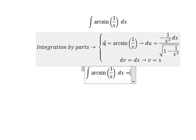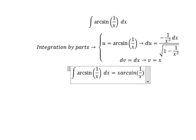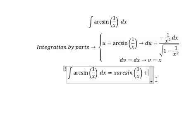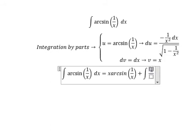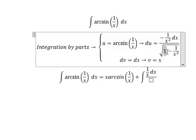Using integration by parts, we get u times v. Because we have a negative here, we get positive. Then we need to integrate 1 over x squared dx times the square root of 1 minus 1 over x squared.